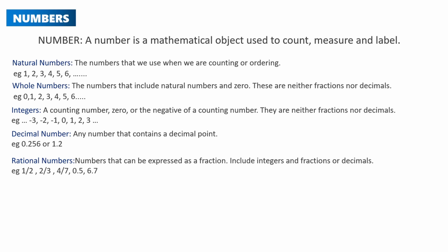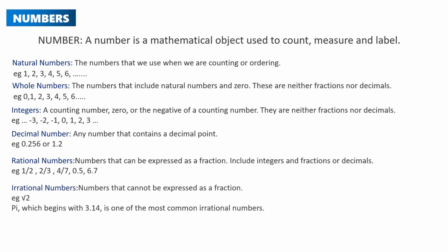Rational numbers are numbers that can be expressed as a fraction; these include integers, fractions, and decimals, e.g. 1/2, 2/3, 0.5, 6.7 and so on. The opposite of rational numbers are irrational numbers — these cannot be expressed as a fraction, e.g. the square root of 2 and pi. There are of course other types like prime numbers, even numbers, and odd numbers, but this is just a quick revision.